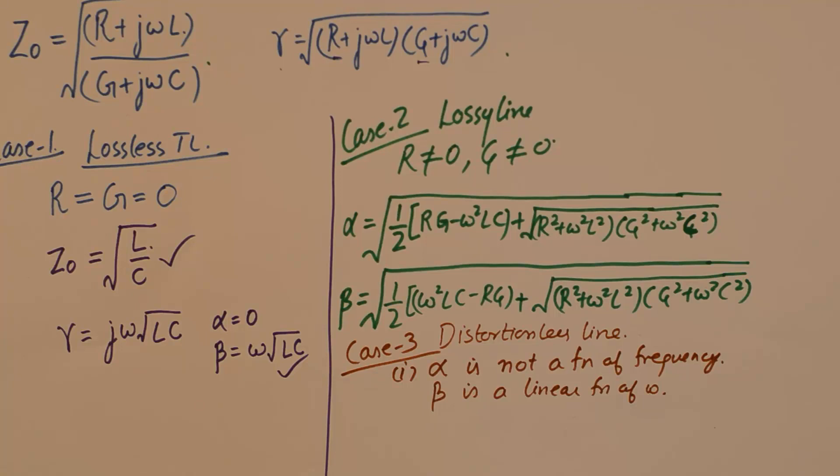On the same lines, if β is a linear function of ω, then the loss component would be the same for any frequency that we transmit. Please understand, distortion is different from loss. Distortion means that some amount of variance from the normal quantity will be there, but what we are targeting here is to reduce the variance. We are wanting no variance at all from the normal quantity when frequency is changed. Simply put, upon changing the frequency, the behavior of the transmission line should not change.